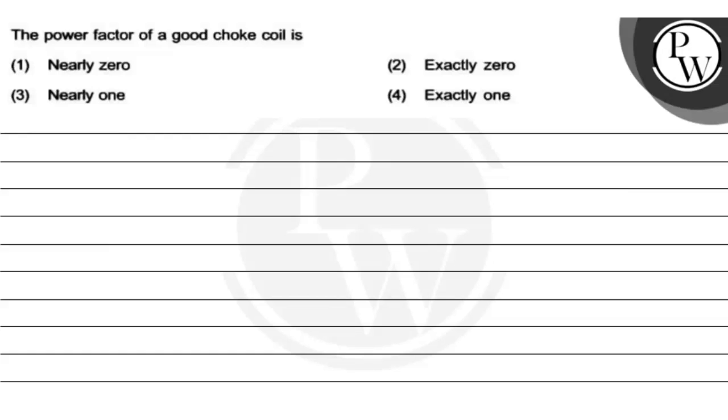Hello, children. Let's read the question. The question says the power factor of a good chalk coil is: first is nearly zero, second is exactly zero, third is nearly one, and the fourth one is exactly one.